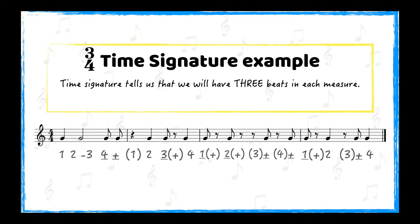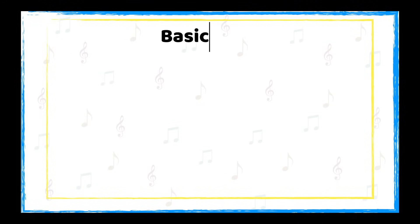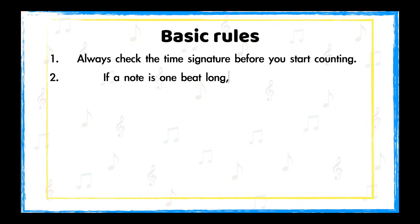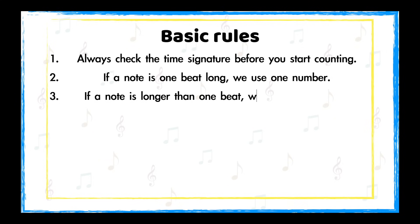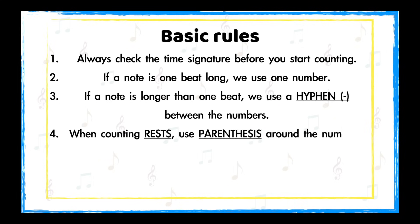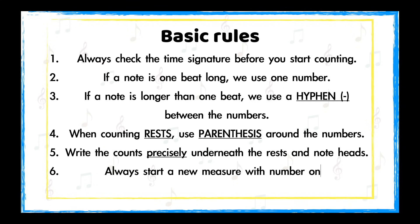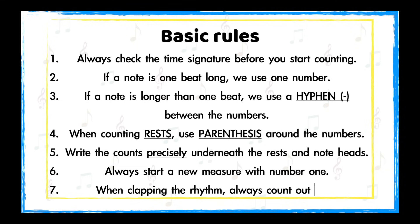Now you know how to count rhythms with whole notes, half notes, quarter notes, and eighth notes, and all the corresponding rests. Don't forget the basic rules: Number one — always check the time signature before you start counting. Number two — if a note is one beat long, use one number to count it. Number three — when counting notes longer than one beat, use a hyphen between the numbers. Number four — when counting rests, use parentheses around the numbers to show you are silent. Number five — write the counts underneath the rests and notes very precisely. Number six — always start a new measure with number one. Number seven — when clapping your rhythms, always count the rhythm out loud.